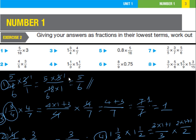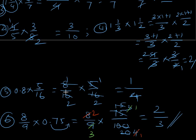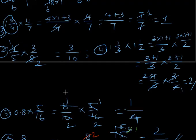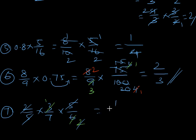The seventh one is 2/3 × 2/5 × 3/7 × 5/6. We can cancel 5 with 5, and 3 with 6 (since 2×3=6, leaving 2). Then cancel the 2 with the remaining 2. After all cancellations, the numerator has 1 and the denominator has 7. The answer for the seventh one is 1/7.